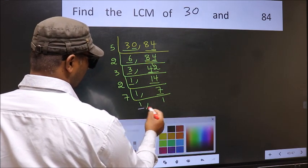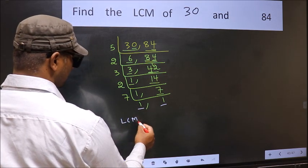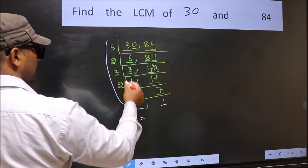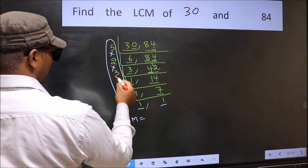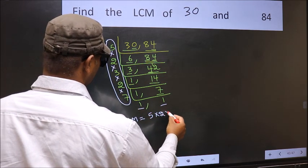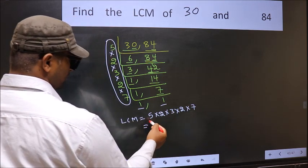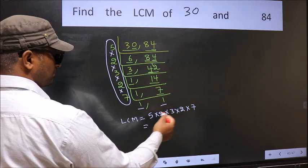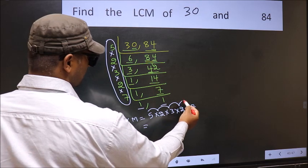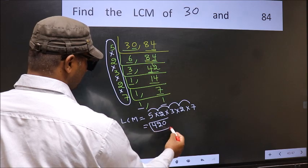So we got 1 in both the places. So our LCM is the product of these numbers. That is 5 into 2 into 3 into 2 into 7. So let us multiply these numbers. 5 into 2, 10 into 3, 30 into 2, 60 into 7, 420 is our LCM.